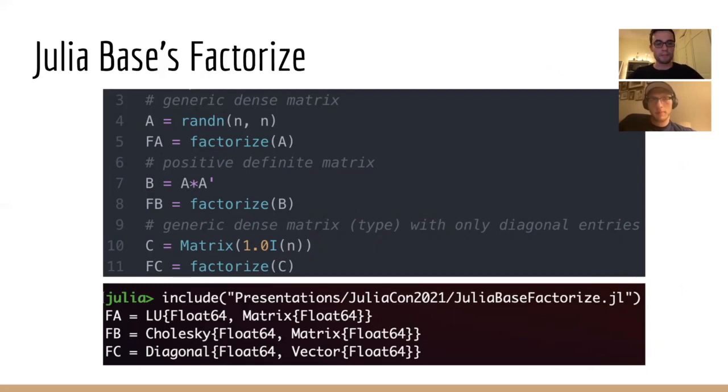For example, matrix A here is generic with no particular structure, and the factorization FA is an LU decomposition. B is a symmetric positive definite matrix for which factorize returns the more efficient Cholesky decomposition. And C is the identity matrix, but cast into a generic dense matrix type, so that multiple dispatch alone cannot detect it. But still, factorize returns a diagonal type. And our goal here is to enable similarly intelligent factorizations for kernel matrices.